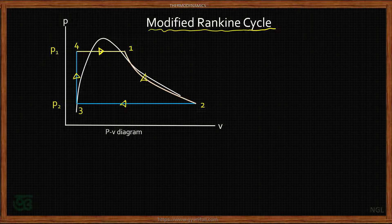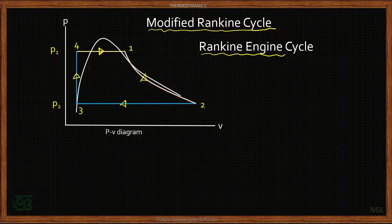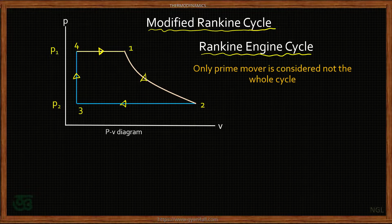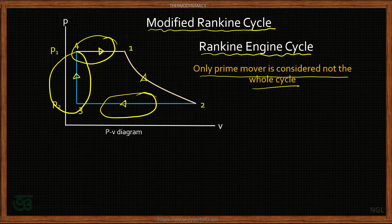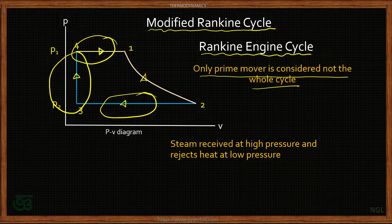If we do not consider the pump, condenser, and boiler, and only consider the engine part — the prime mover part — then that type of cycle is called the Rankine engine cycle. In the Rankine engine cycle, only the prime mover is considered, not the whole cycle. So the pumping process, heat supply process, and condensation process are not considered. This is the cycle for the engine only — specifically a steam engine.